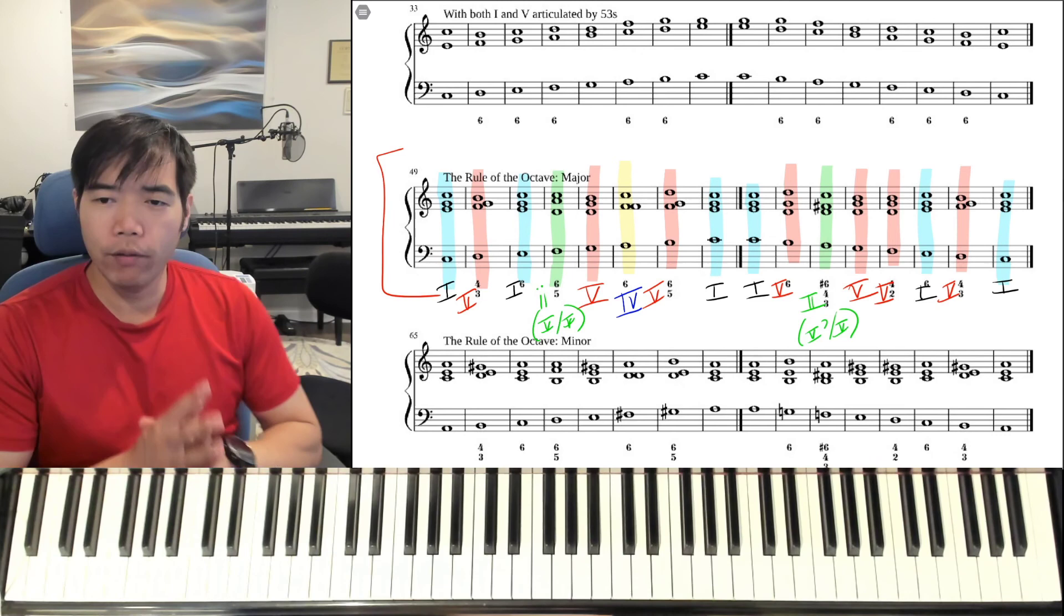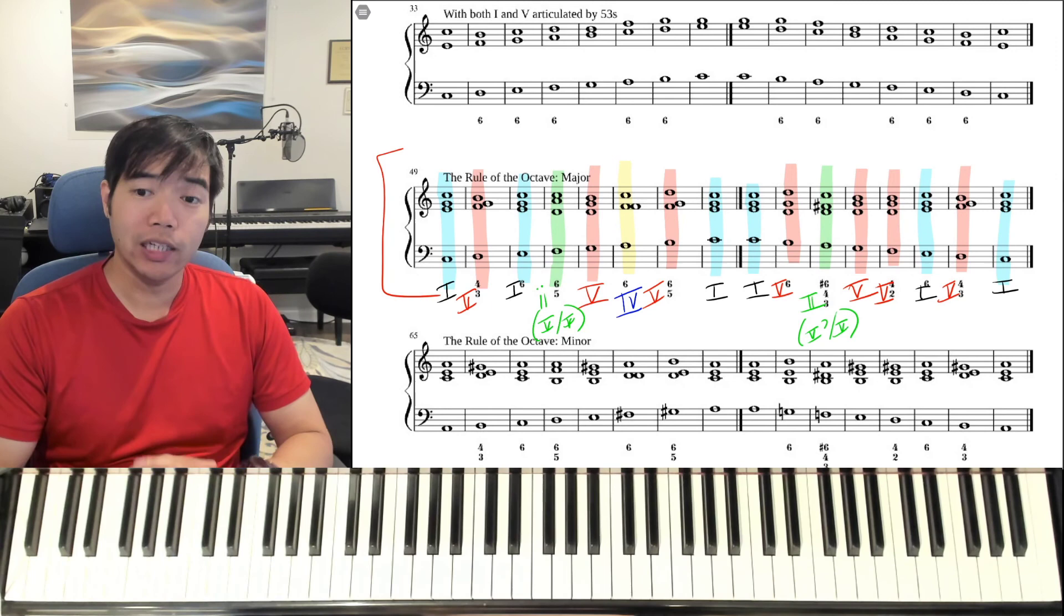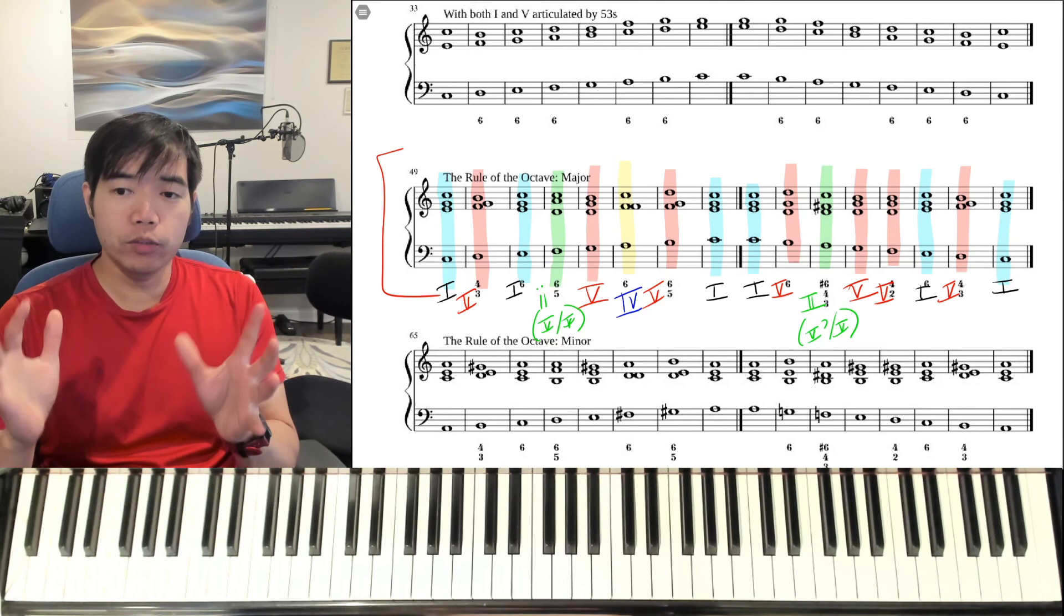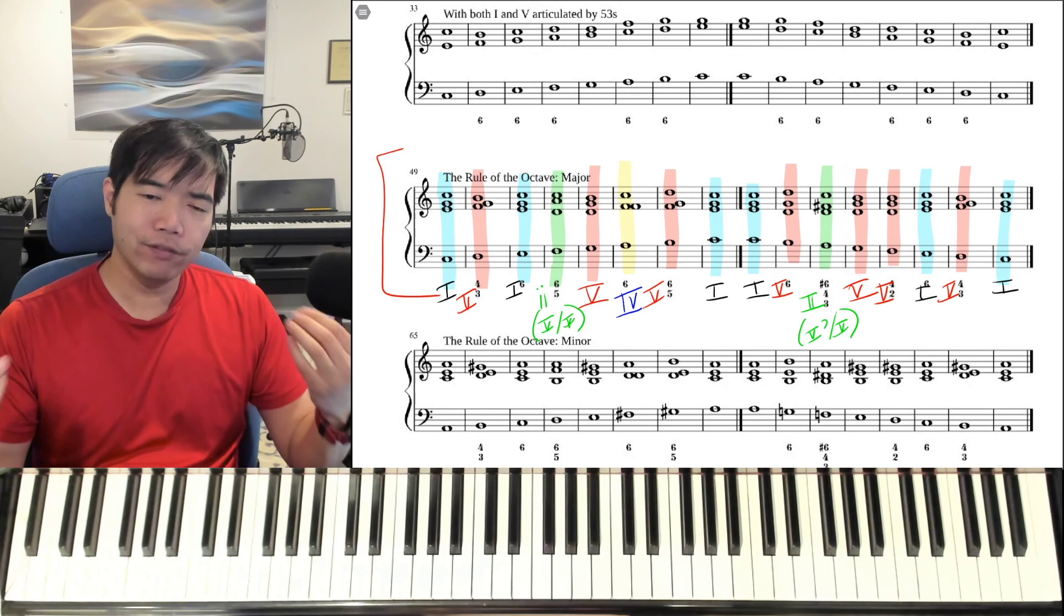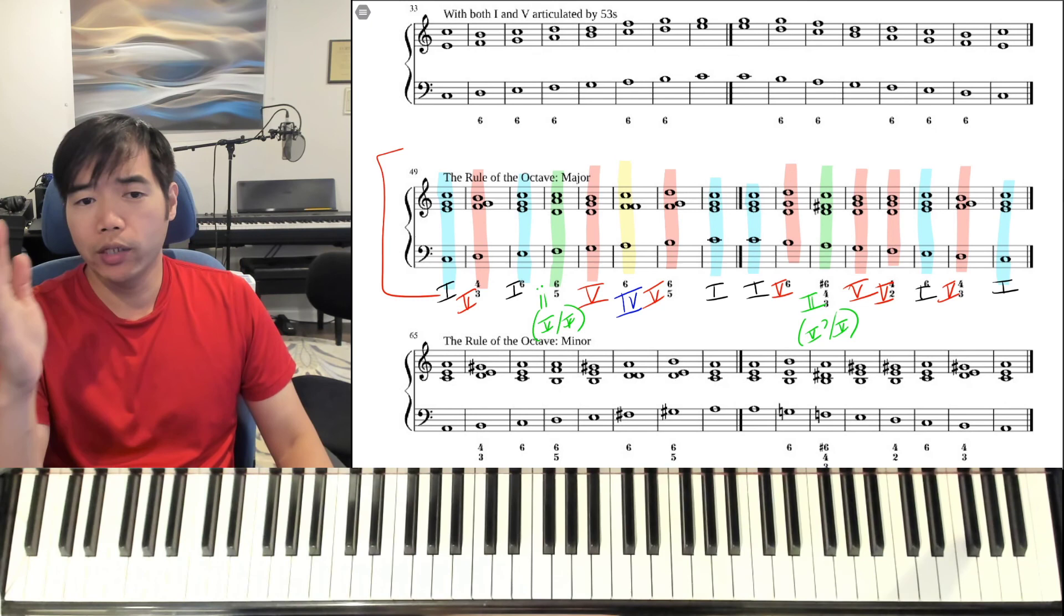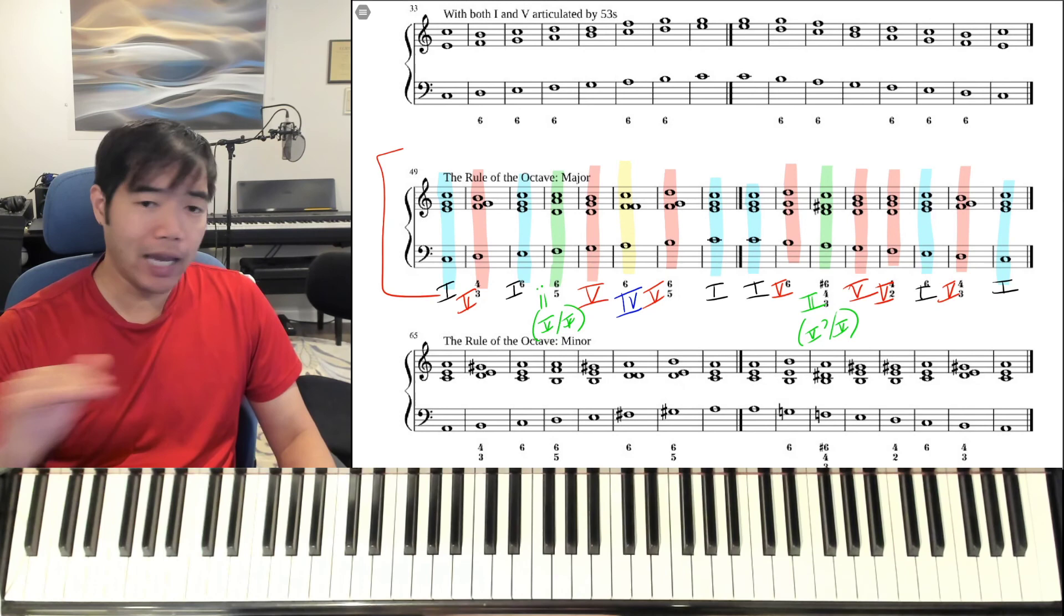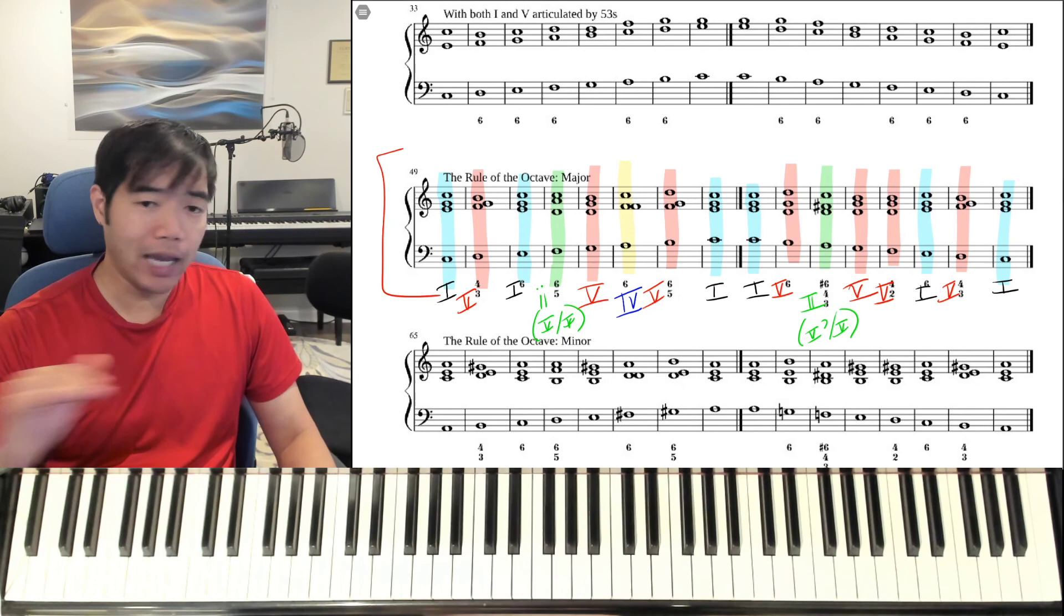So hopefully this was helpful to understand basically how the rule of the octave was constructed. It is literally probably the most basic way you can harmonize this. We could go a lot more fancy. We can use other types of relationships besides the dominant relationship. But the whole point of this exercise is to give musicians a very fundamental understanding of how to lead from one note to another. And how to harmonize notes within a scale. Obviously this can be applied to any major scale. In the minor form we have some variations. And we can take a look at that later. But for now, that's all I have for you today. And I will see you in the next video. Take care.